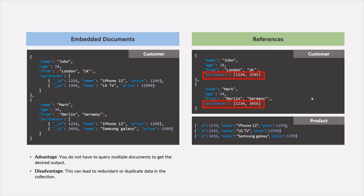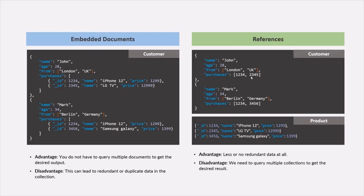This is what the reference approach is. The advantage of this approach is that we have less or no redundant data at all, because we are simply storing the ID of the products, not the product itself, thereby reducing the duplicate data in our collection. But the disadvantage is that in order to get the desired result from both the customer collection and the product collection, we will have to query both collections. If I want customer details as well as product details in the result, we will have to query the customer collection, check for the product IDs, and based on those product IDs, also query the product collection. Since we need to query multiple collections, it might affect the performance of the application.